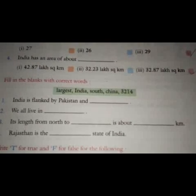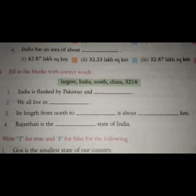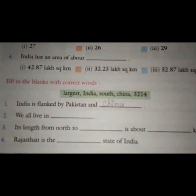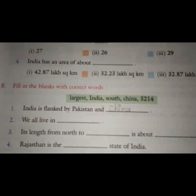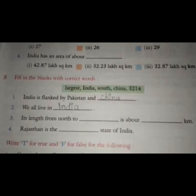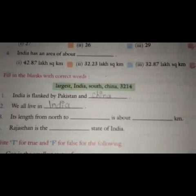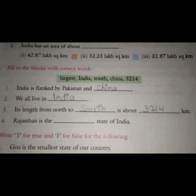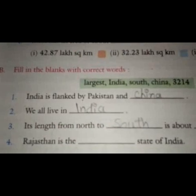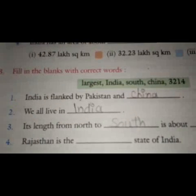Here are some fill-in-the-blank questions with given options. The first question is: India is flanked by Pakistan and dash — the correct answer is Afghanistan. The second question is: we all live in dash — the correct answer is India. The third question is: its length from north to dash is about dash kilometres — the correct answer is south, 3,214 kilometres. The fourth question is: Rajasthan is the dash state of India — the correct answer is largest.